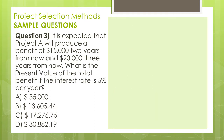Question number 3: It is expected that Project A will produce a benefit of $50,000 two years from now and $20,000 three years from now. What is the present value of the total benefit if the interest rate is 5% per year?